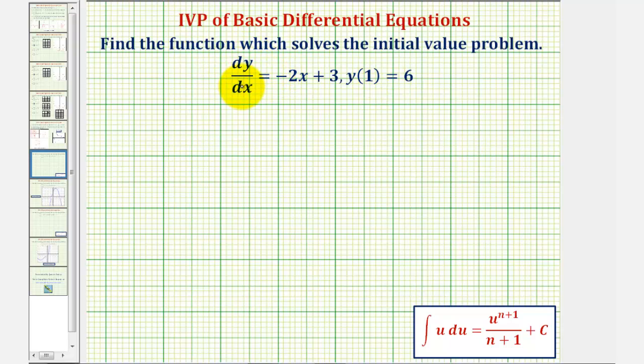Notice how our derivative function is a function of x, so we're looking for a function y(x) such that the derivative of that function is -2x + 3 and y(1) equals 6. This is actually the simplest type of differential equation that can be solved by separation of variables.